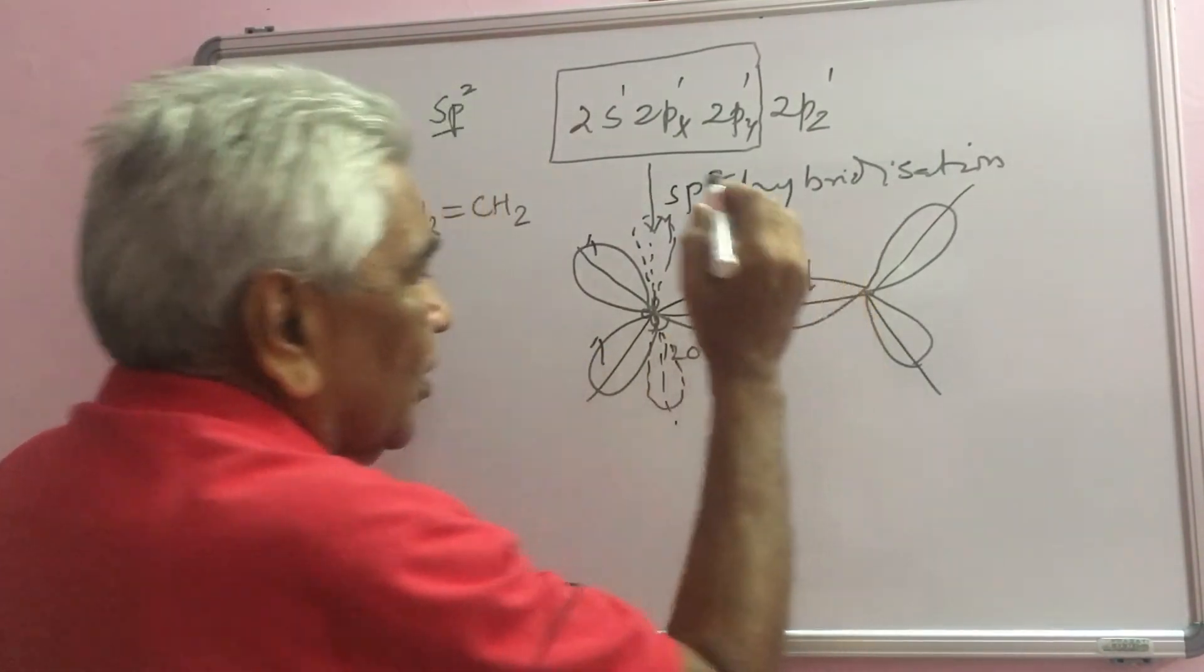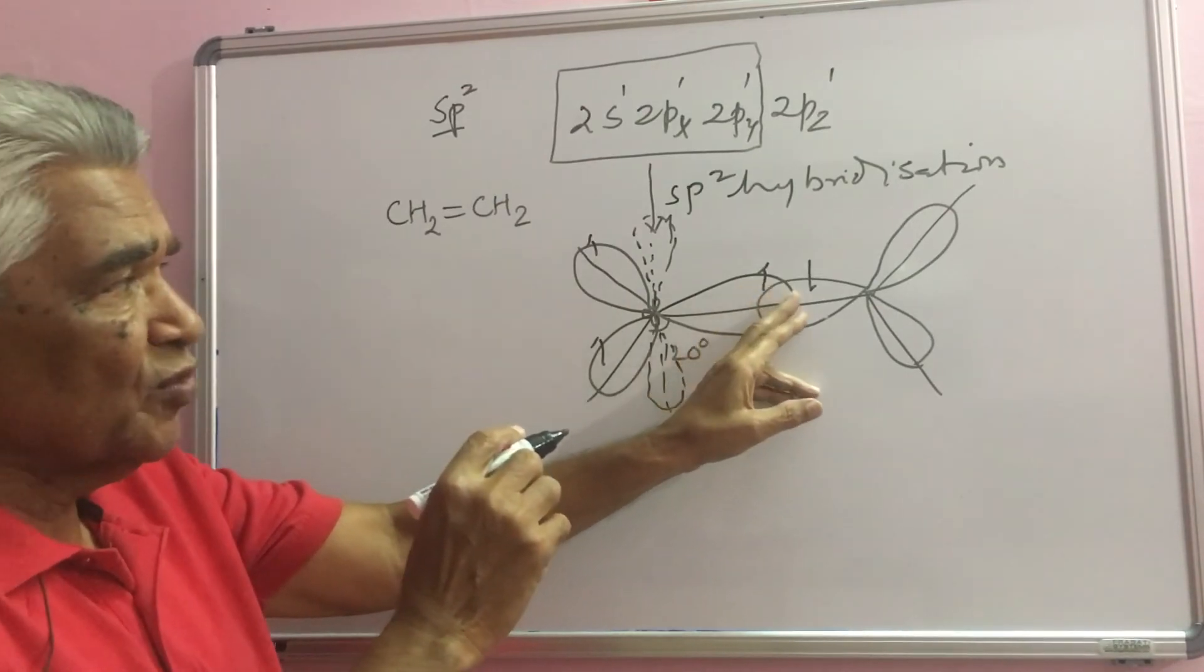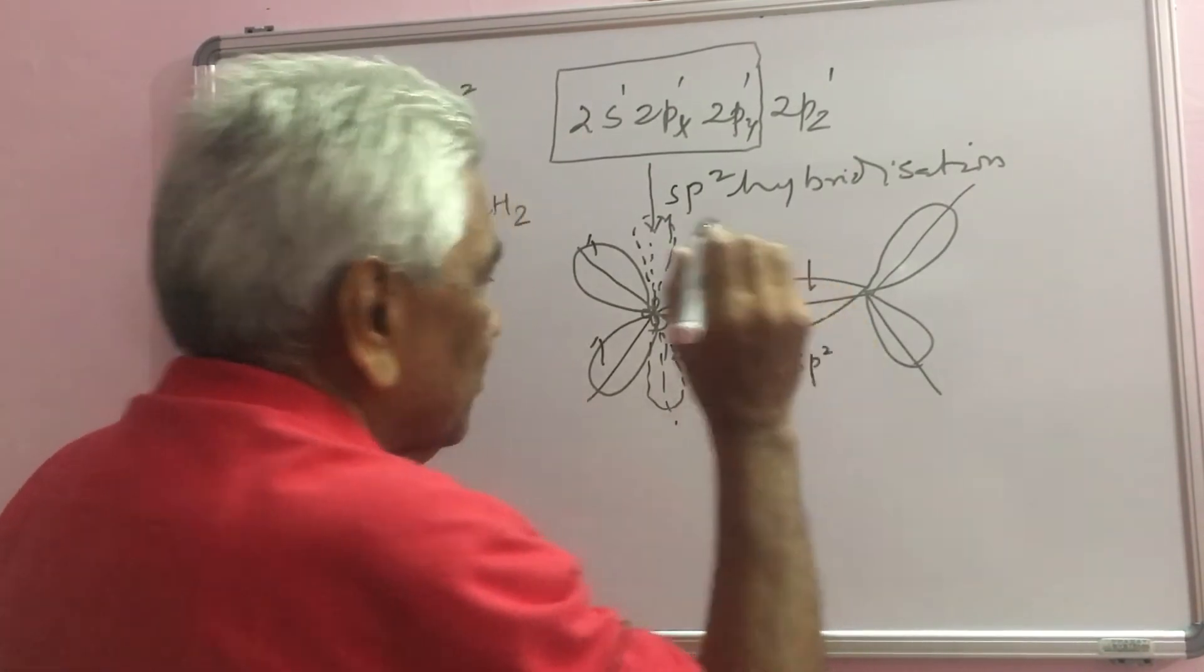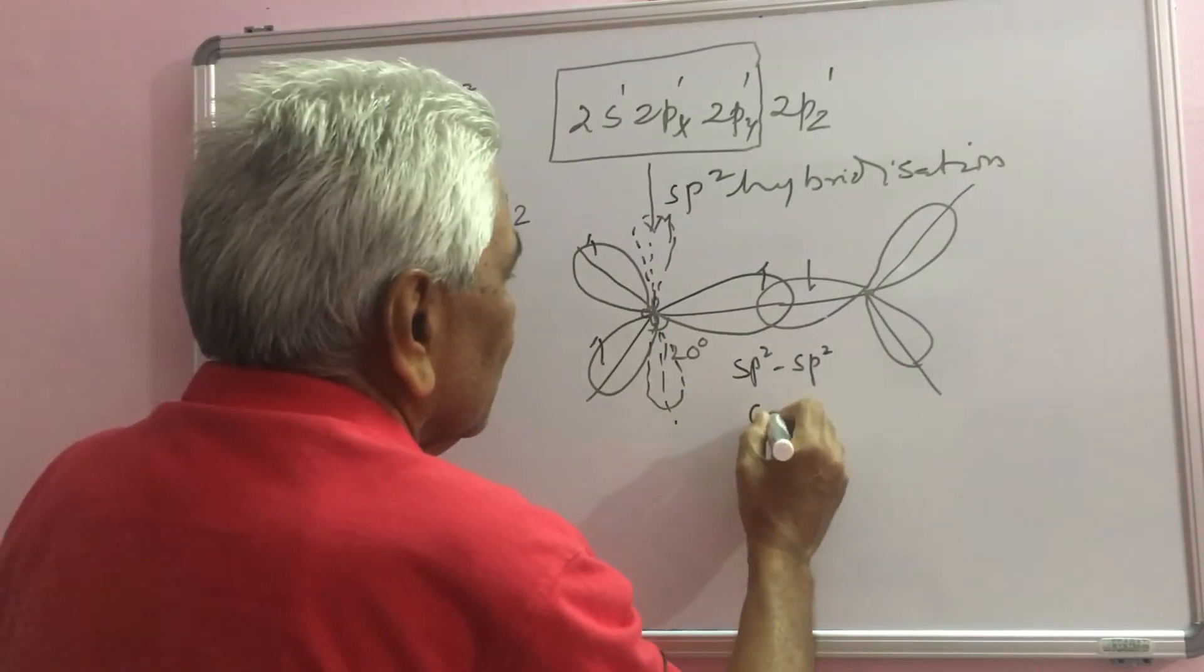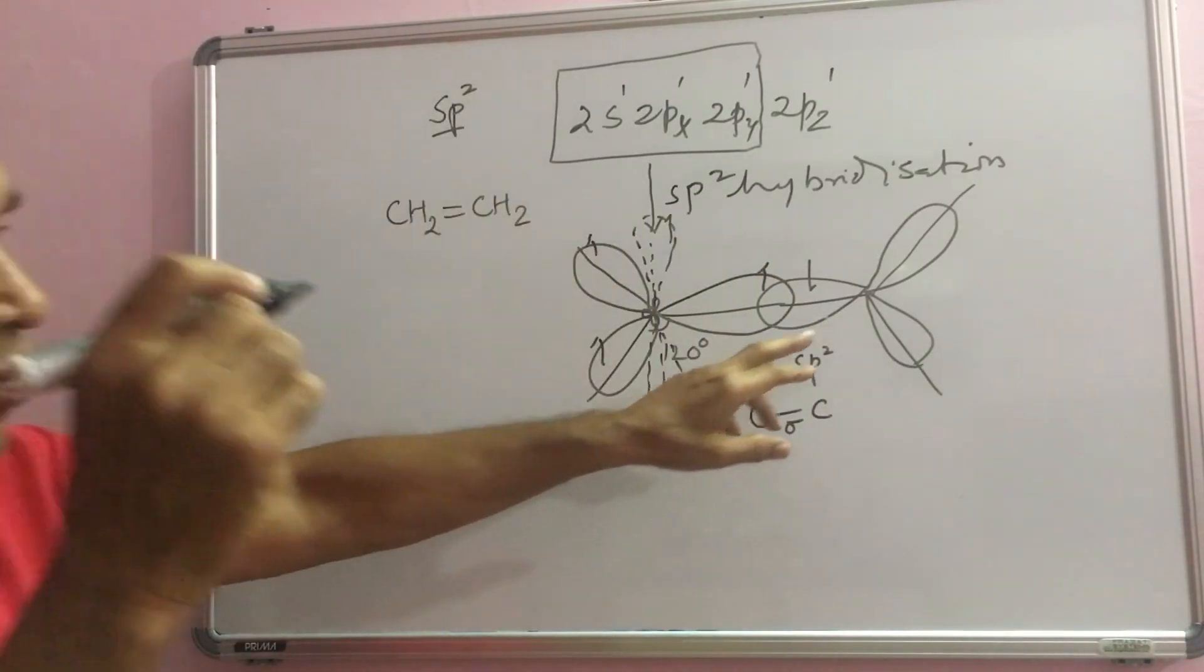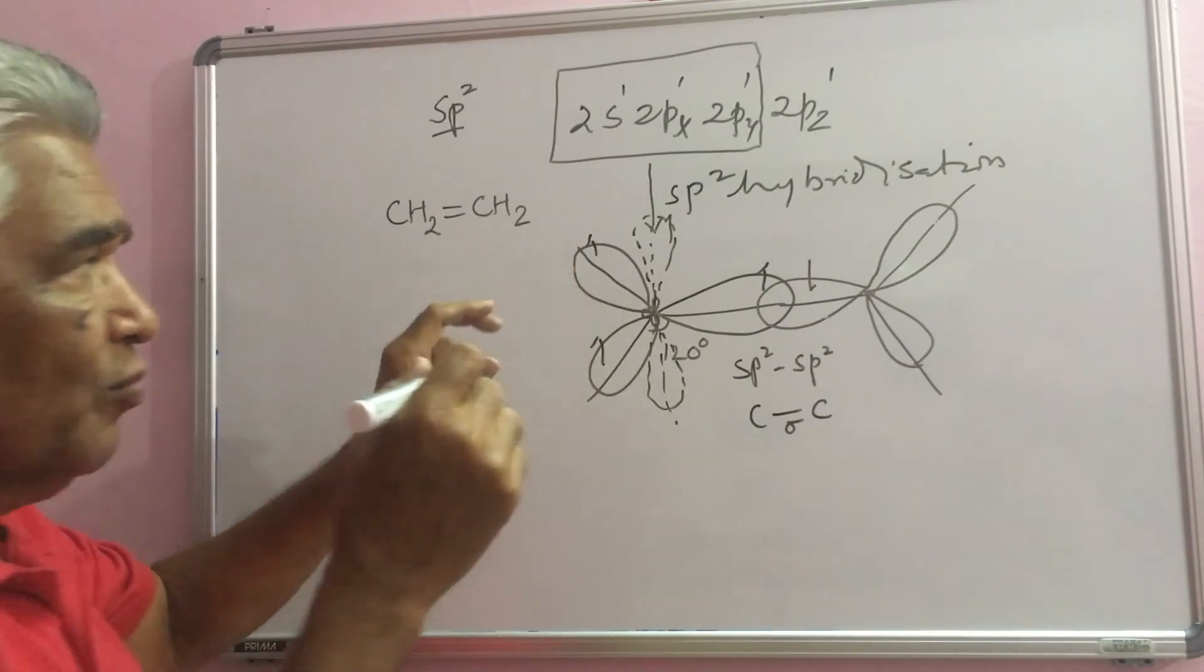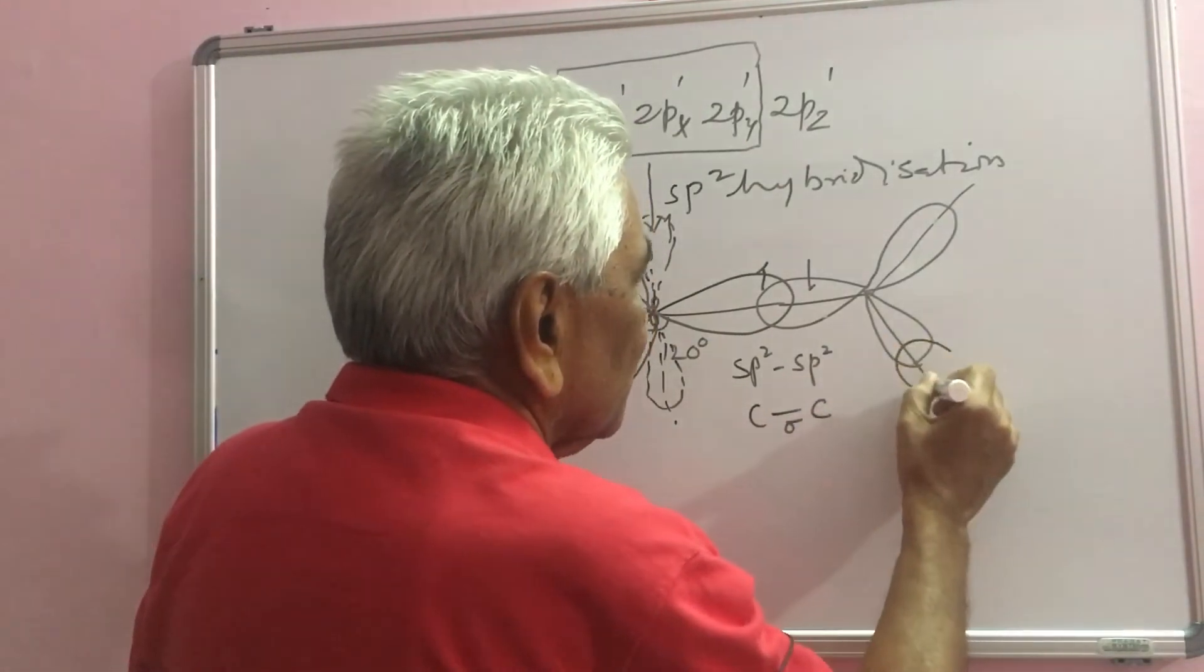Here sp2-sp2 orbital overlap takes place with opposite spins of electrons, forming a C-C sigma bond. These 4 sp2 orbitals overlap with 4 hydrogen atoms through coaxial overlap.